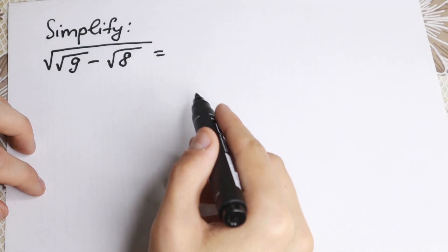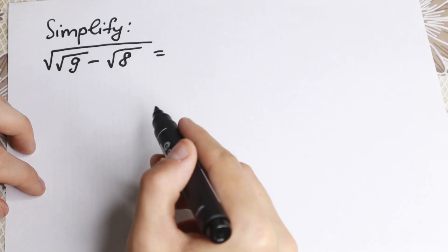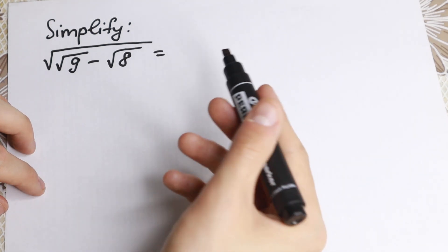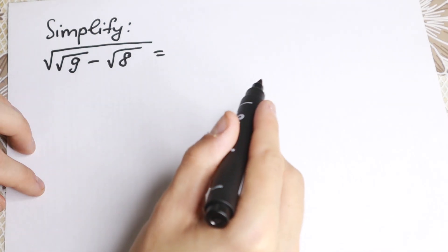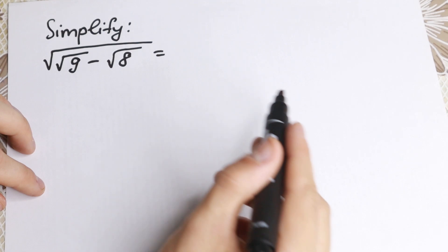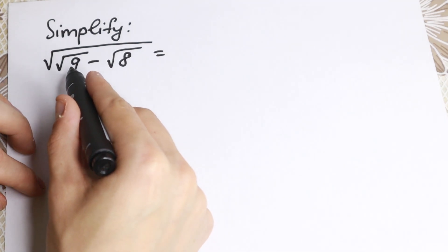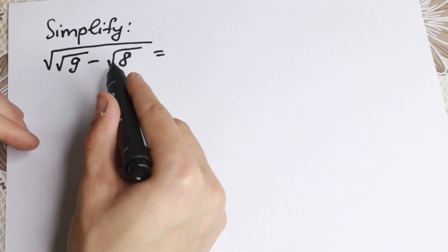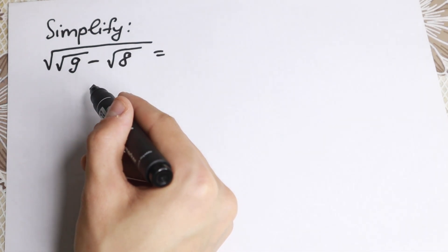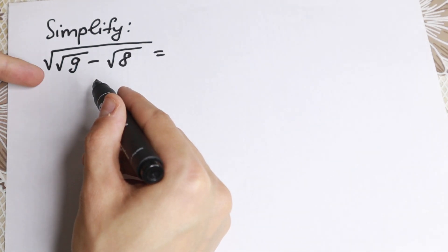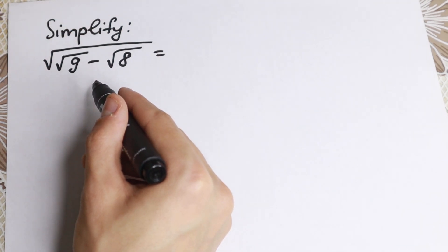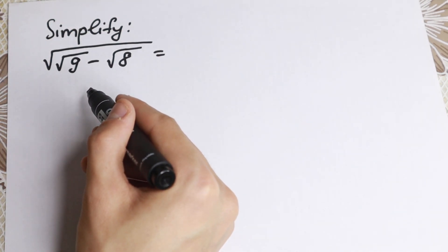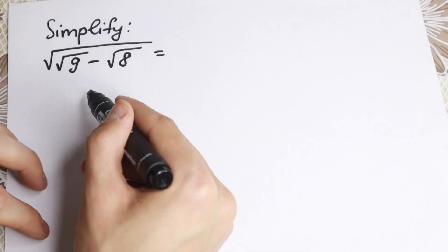A lot of students make this mistake: they subtract like 9 minus 8 and say the answer is 1. They think that we have square root of 9 minus square root of 8, which equals 1, and then the outer square root also gives 1 as a result. But this is absolutely incorrect.